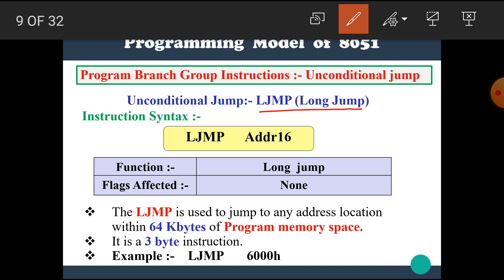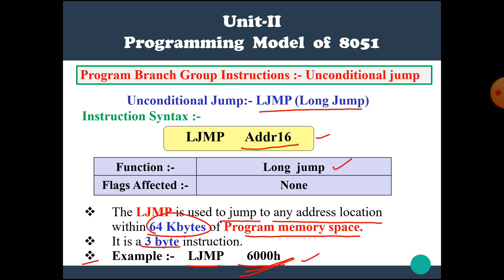The first is long jump. Its syntax is LJMP address16, meaning this instruction requires a 16-bit address. LJMP is used to jump to any address location within 64 kilobytes of program memory space. It is a 3-byte instruction. For example, LJMP 6000H means after execution of this instruction, the PC jumps to memory location 6000H.